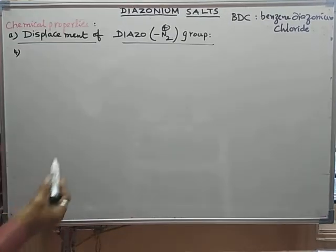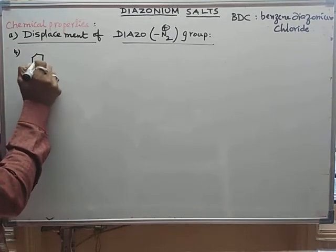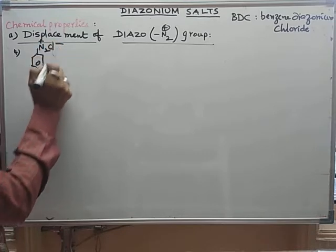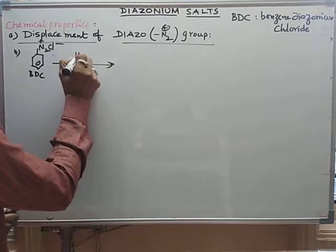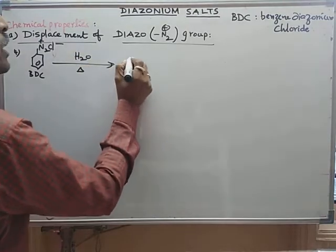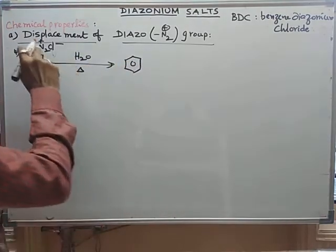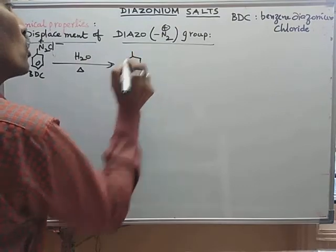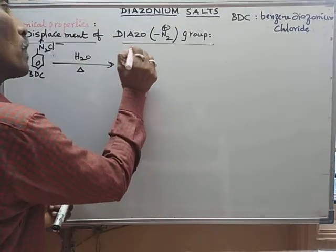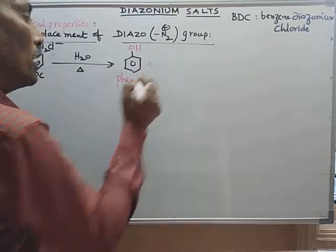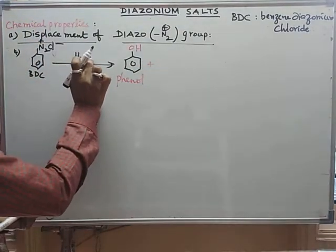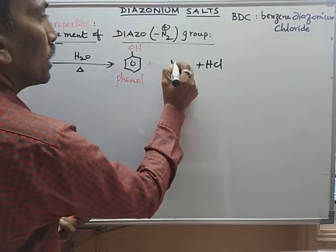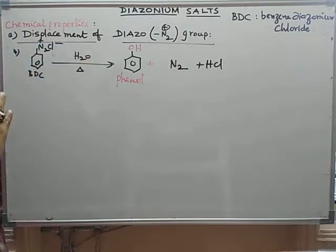When benzene diazonium chloride is warmed with water, the N2+ is removed, and a phenyl carbocation is attacked by OH-. The product is phenol (benzene ring with OH group). Other products are HCl and N2 gas.